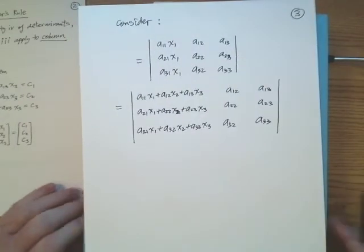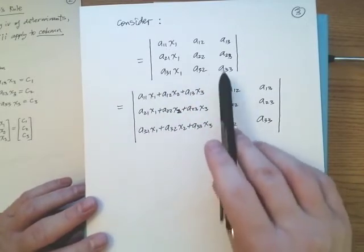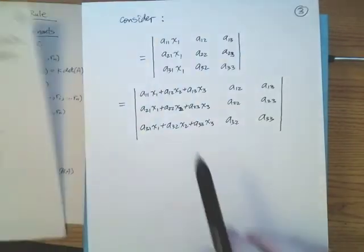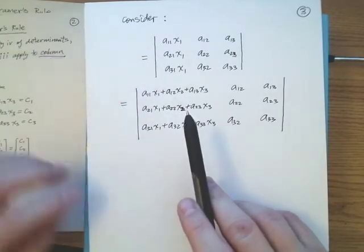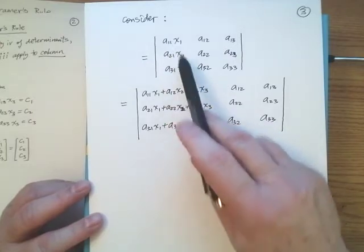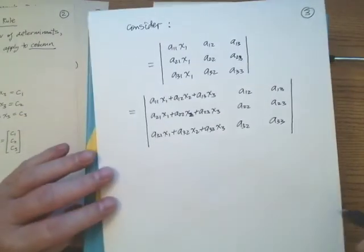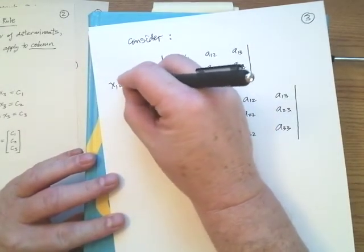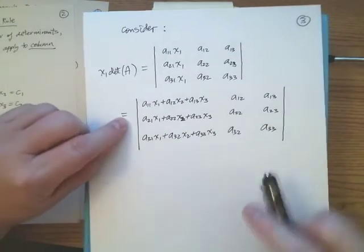Now consider this: I've got vertical bars indicating I'm taking a determinant. Notice down the first column I have x1 as a factor. I've actually taken the first column of my coefficient matrix and multiplied it by the scalar x1. My properties of determinants tell me I can factor out x1, so I write x1 times the determinant of A. These two should be equal.